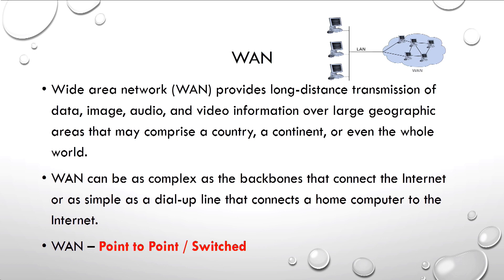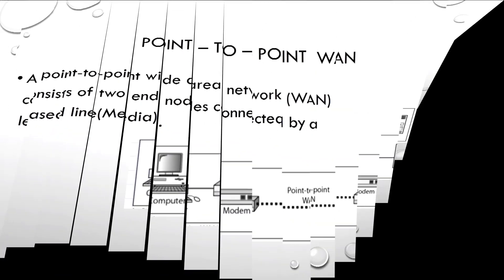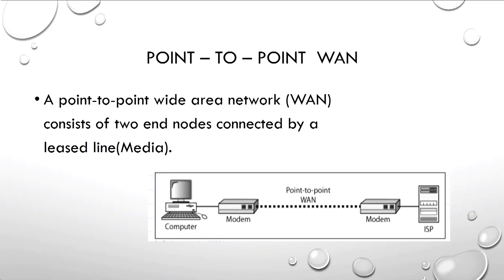WAN can be as complex as the backbone that connects the internet, or as simple as a dial-up line that connects a home computer to the internet. WAN can interconnect two or more LANs or cover the entire global world. WAN can be further divided into point-to-point WAN or switched WAN. Point-to-point WAN consists of only two end nodes.